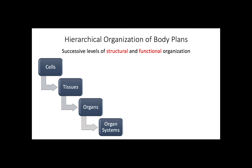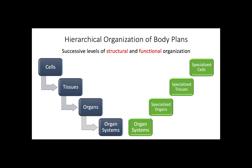As with the hierarchical organization in many other groups of organisms, animals have successive levels of structural and functional organization that go from cells to organ systems. The idea of hierarchical organization establishes that cells develop into tissues, tissues into organs, and organs into systems. This is often called a bottom-up organization, as shown in the dark boxes. However, if we consider a top-down hierarchy, shown in the green boxes, we can see the multi-layered basis of specialization — how organ systems are made up of specialized organs, tissues, and cells.